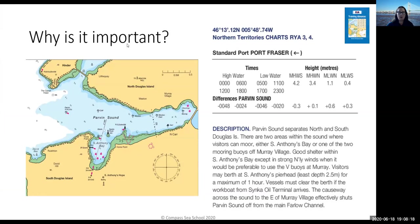Why is it important? Well, for a starter for ten, we'd quite like to go sailing somewhere different — we don't just want to sail from standard port to standard port. These are extracts from the RYA training almanac. I've chosen Parvin Sound, which is a secondary port. The most important thing to understand is: where is its standard port? Every standard port has a collection of secondary ports that belong to it. In this instance, the secondary port is Parvin Sound and the standard port is Port Fraser.